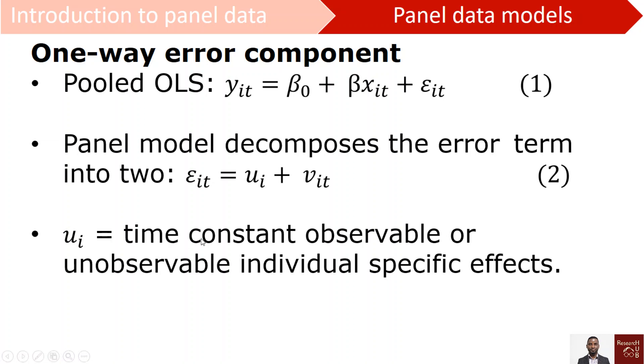We control for this time constant unobservable factors. u_i, and v_it is the remaining error term. So that one is random.